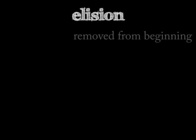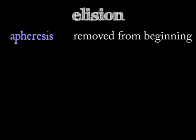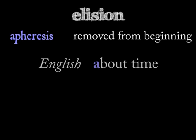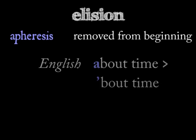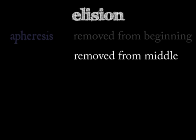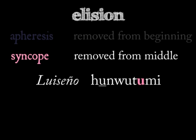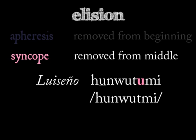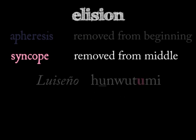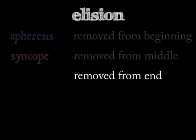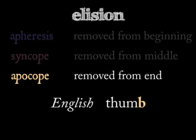Is the phoneme removed from the beginning of a word? That's aphaeresis. For example, English speakers may shorten 'about time' to ''bout time.' Is the sound removed from the middle of a word? This kind of deletion is known as syncope. In the Luiseno word meaning 'the bears,' pronounced 'hunwutmi,' speakers syncopate that middle U. Is the phoneme removed from the end of a word? That change is called apocope. So the word 'thumb,' losing its final B over time, is an example of apocope.